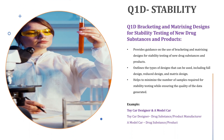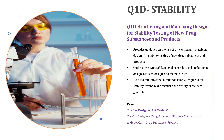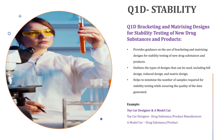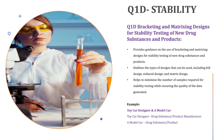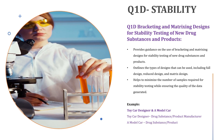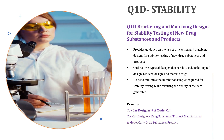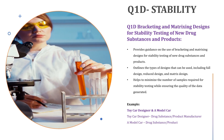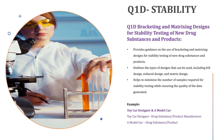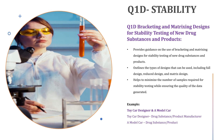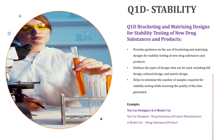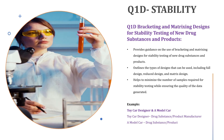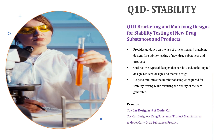Now let us discuss Q1D — bracketing and matrixing designs for stability testing of new drug substances and products. Companies can use these guidelines to optimize the stability testing process and reduce the number of tests required. With bracketing design, the company identifies the most extreme storage conditions — highest and lowest temperature and humidity levels — and tests the drug product at those conditions. If the drug remains stable, it is assumed to remain stable at intermediate conditions as well. With matrixing design, the company selects a subset of storage conditions and time points representing different combinations of the stability profile.